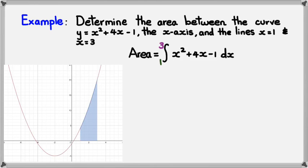So, here's the graph of Y equals X squared plus 4X minus 1, and there you can see what I've done with the shaded area between where X equals 1 and X equals 3. So, there's X equals 1 and X equals 3.